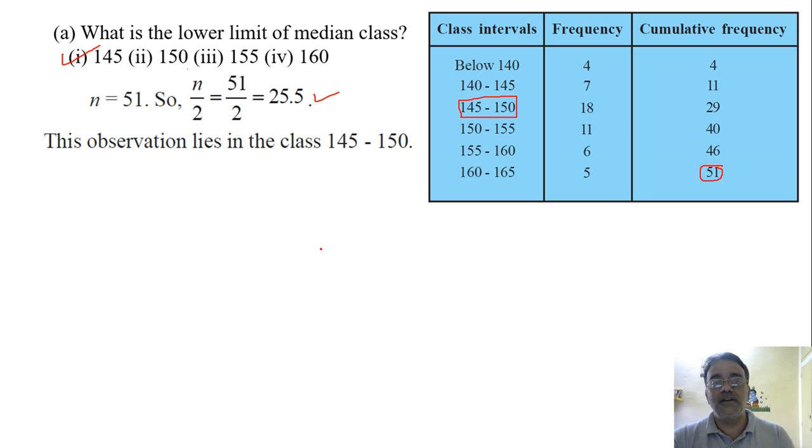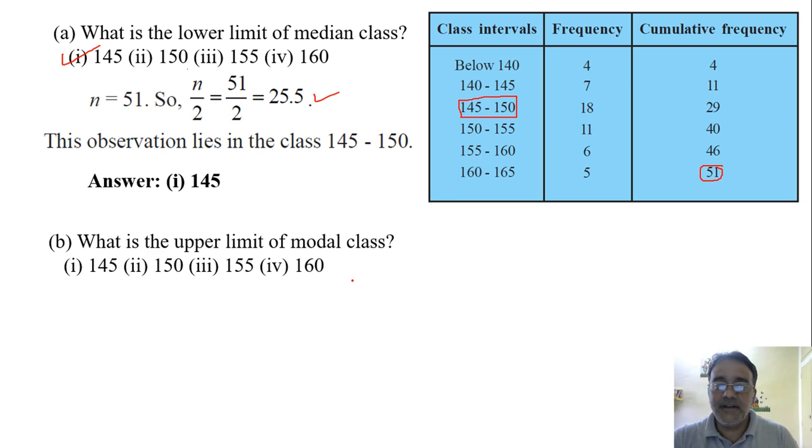Now we'll move toward question number 2. What is the upper limit of the modal class? Modal class means the class which has the maximum frequency. So the maximum frequency is 18 and it belongs to the same class as the median class. So this is the modal class and the upper limit is 150.